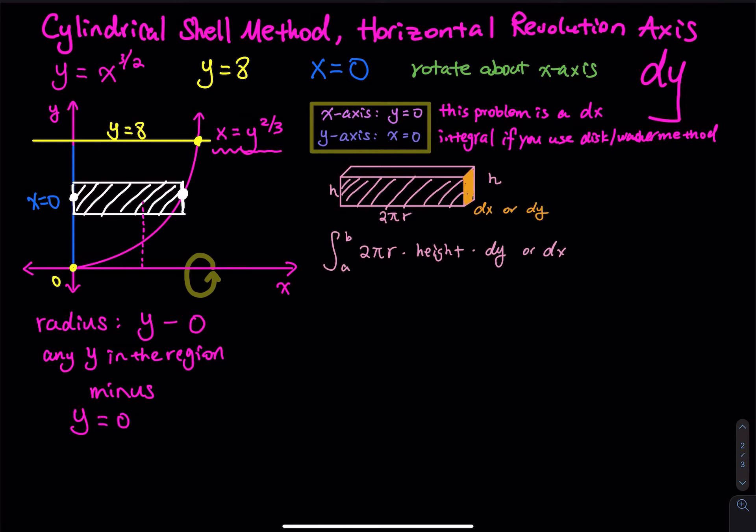And then we have the height. Then this time will be the right function minus the left function. So right minus left. Then this will be y to the 2/3 minus 0. So this is x equals y raised to 2/3 and then minus x equals 0. So now we have the radius and the height.